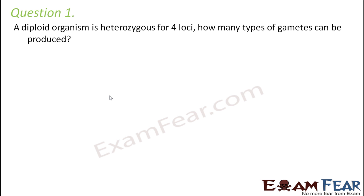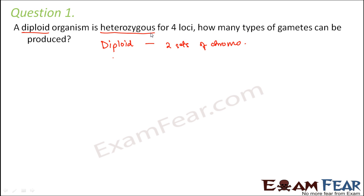The first question says: a diploid organism is heterozygous for four loci — how many types of gametes can be produced? Let us understand it word by word. When I say diploid, that means it has got two sets of chromosomes. When I say heterozygous, that means the two alleles are going to be different — so different alleles for a gene.